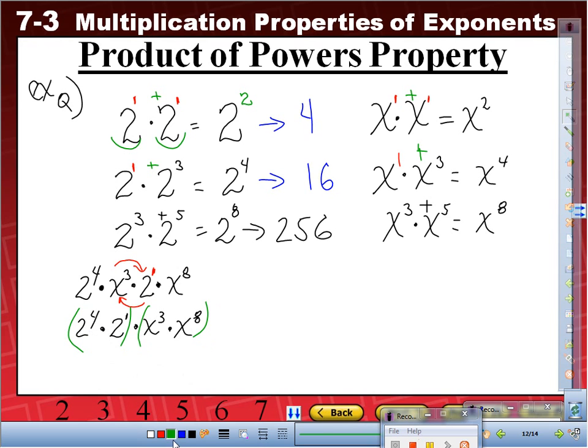So what does this become? 4 plus 1, 5. So this is 2 to the 5th times x cubed times x to the 8th becomes x to the 11th because they're the same base and we add the exponent. So let's simplify this one. What is 2 times 2? What is 4 times 4? Times 2. Very good. That's 32x to the 11th.